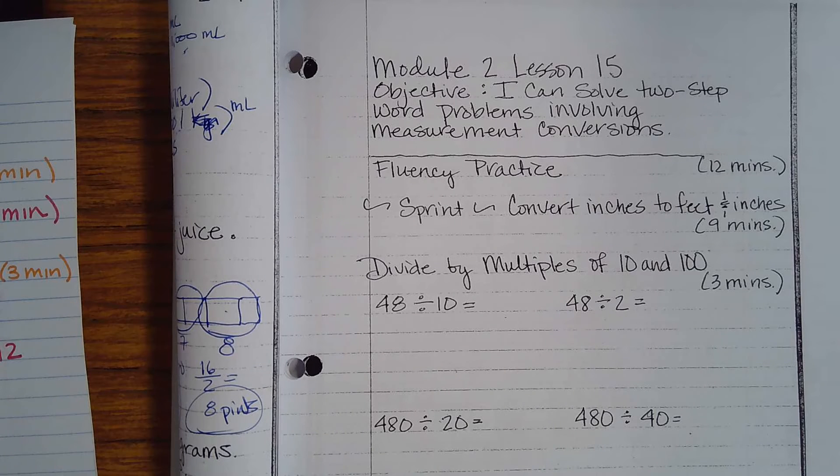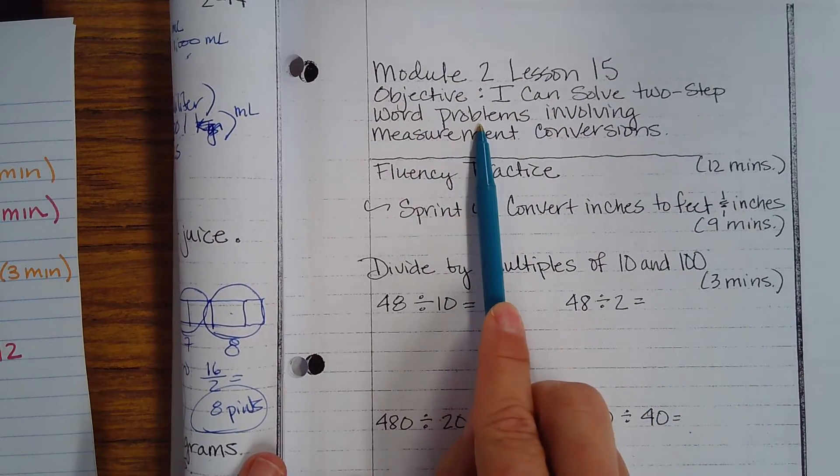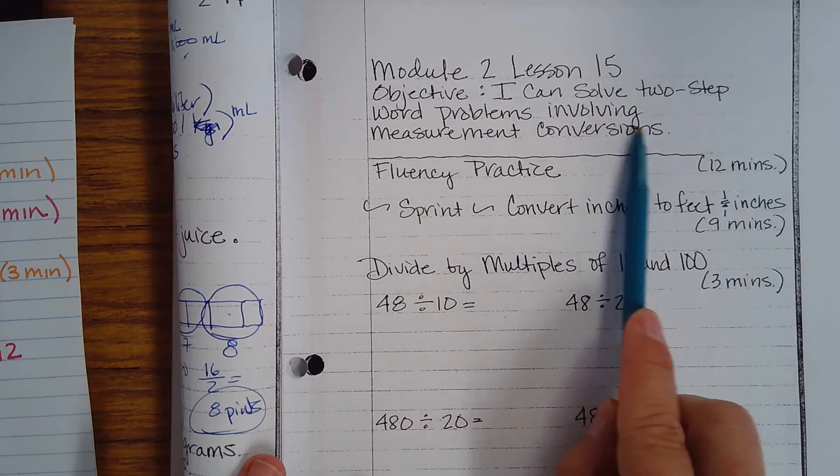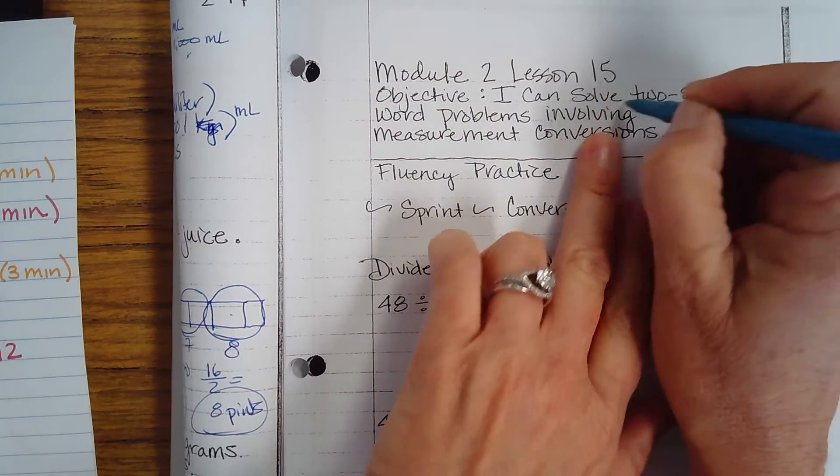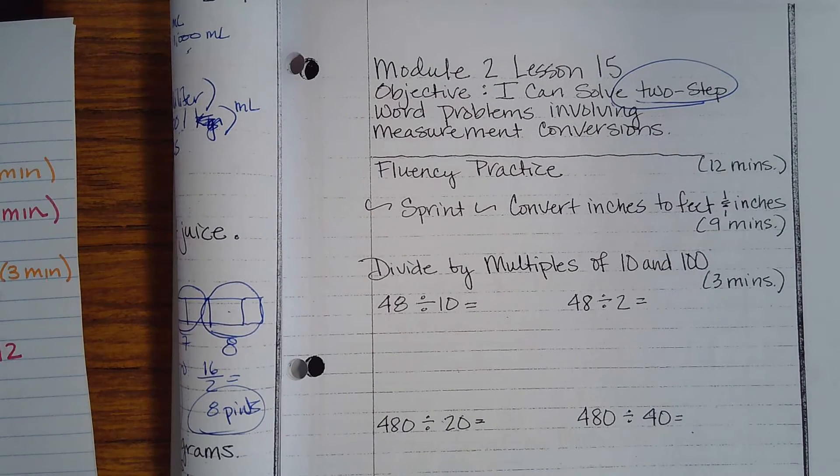This is Engage New York, Module 2, Lesson 15. Read the objective out loud while I read it. I can solve two-step word problems involving measurement conversions. So we are going to have two steps in our word problems today.